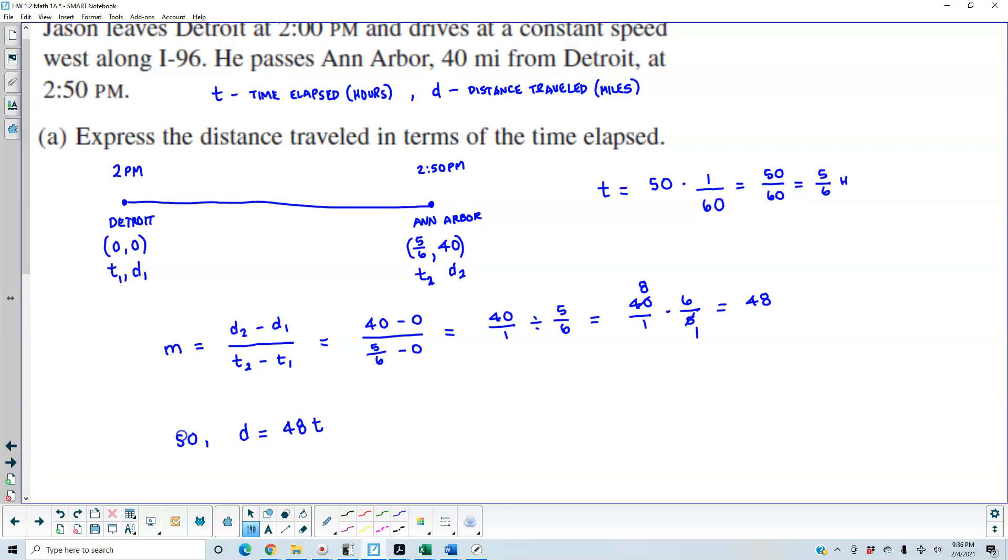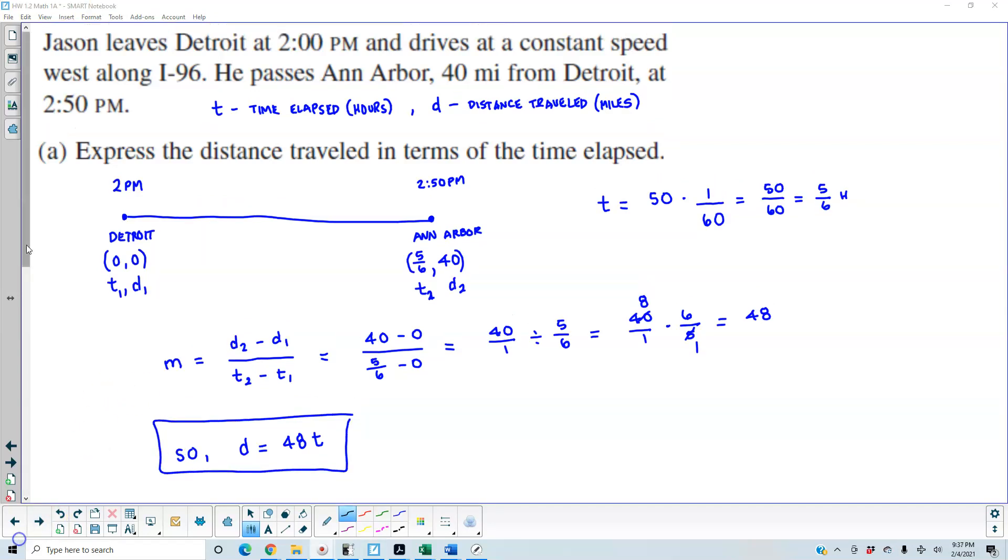We can say that D is going to equal 48 times T. That is expressing distance traveled in terms of time elapsed. Therefore, there is our expression or equation.